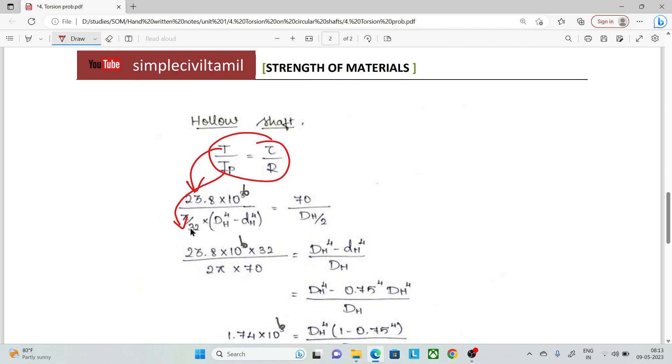Substituting into the torsional equation: shear stress τ = 70, with radius d_h/2. Now we can cancel and solve.